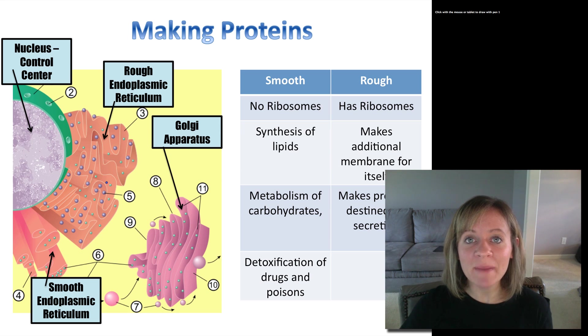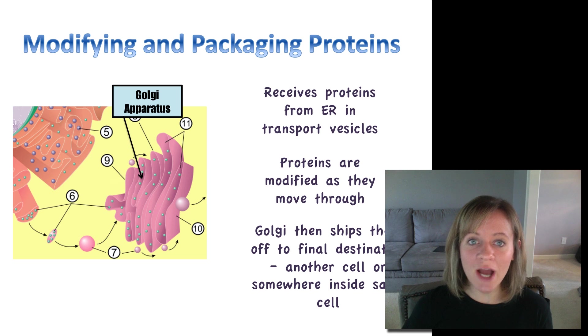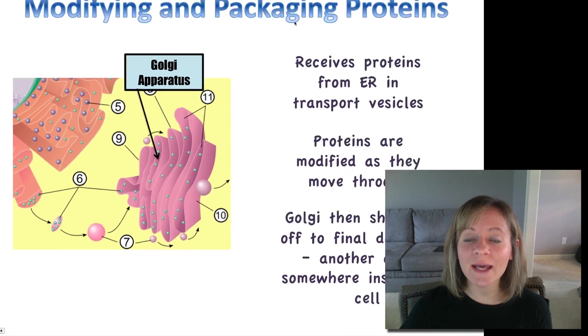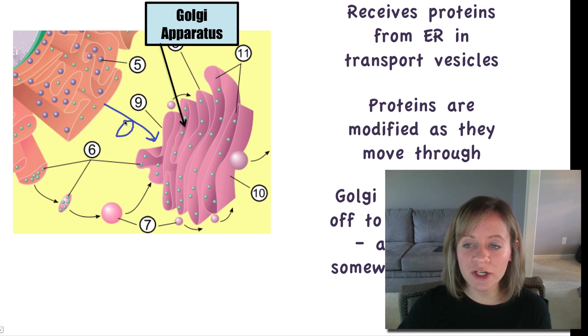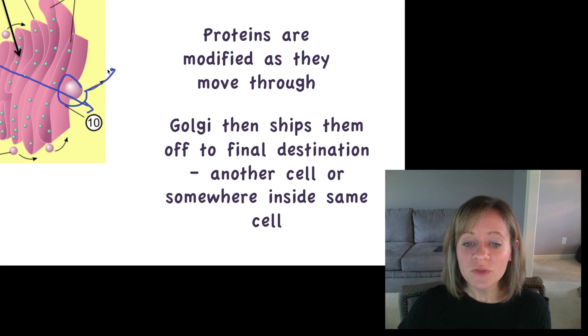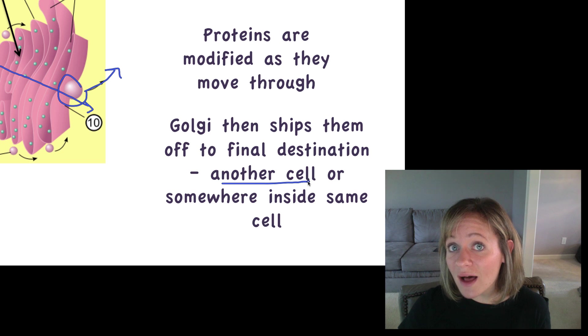So remember, the rough ER is going to make a protein and then send it to the Golgi apparatus. The Golgi apparatus is going to modify and package those proteins. It receives those proteins from the ER in what we call a transport vesicle. Proteins are modified as they move through this Golgi apparatus, and then the Golgi is just going to ship that protein off to the final destination. So it might go to another cell or it might go somewhere inside of the same cell.